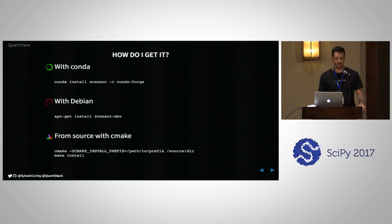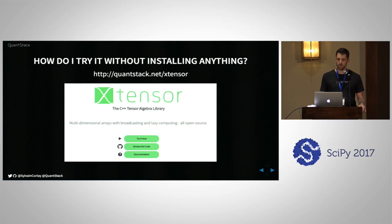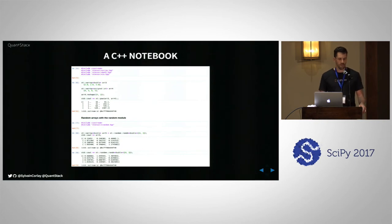If you want to try xtensor, you can conda install it — it's available on Conda Forge. There is also a Debian package in Debian unstable. You can also check it out on GitHub and install from source with CMake. If you want to try it without installing anything, go to quantstack.net/xtensor — we provide a 'try it now' button, which is very rare for a C++ library. This uses a notebook hosted on Binder with a C++ kernel using the Cling C++ interpreter, an amazing technology developed at CERN.